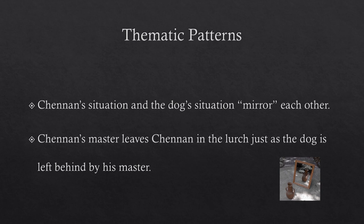Let us look at other thematic patterns brought out by this narrative structure. The deity and the pariah mirror each other in one case. In another situation, Chenin's situation and his dog's situation mirror one another. Chenin's master leaves on his boat, leaving behind Chenin and his family; similarly, Chenin leaves behind his own dog in the flooded hut. Chenin's situation parallels his master's — both of them leave somebody behind.